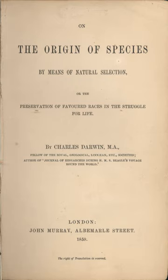All naturalists in the two English universities, Oxford and Cambridge, were Church of England clergymen, and science became a search for these laws. Geologists adapted catastrophism to show repeated worldwide annihilation and creation of new fixed species adapted to a changed environment, initially identifying the most recent catastrophe as the biblical flood. Some anatomists such as Robert Grant were influenced by Lamarck and Geoffroy, but most naturalists regarded their ideas of transmutation as a threat to divinely appointed social order.